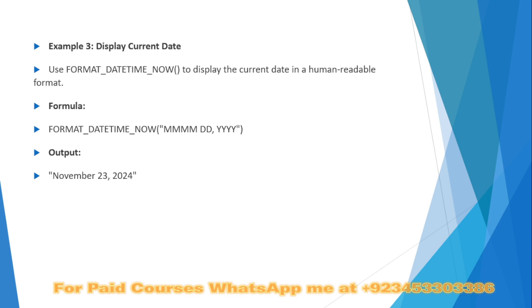Moving on to display current date — we already explored the NOW function. Here we use FORMAT_DATETIME(NOW()) to display the current date in a human-readable format. FORMAT_DATETIME will format the current date according to the format provided in the function.